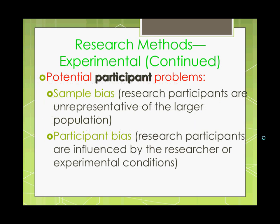Now some potential participant problems: there could be sample bias — when research participants are unrepresentative of the larger population. When you're not being considerate of who you're drawing upon, if you don't have a random method of pulling together a group of people to participate in your research, that can be a major issue. With participant bias, this is when participants are influenced by the researcher or the experiment conditions. Perhaps you're sitting there thinking, well they probably want me to press this lever around this time — instead of just letting things naturally happen. Because as researchers, our job is to observe however you're affected by the research we're conducting. If being watched is changing what you're doing, that could be leading to participant bias and affecting the results.